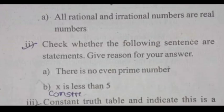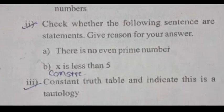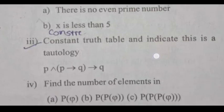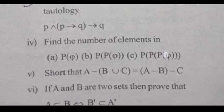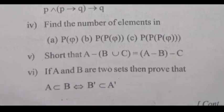Check whether the following sentence or statement is a constant truth table and indicates this tautology. Find the number of elements. Then, show that A minus B union C is equal to A minus B minus C.